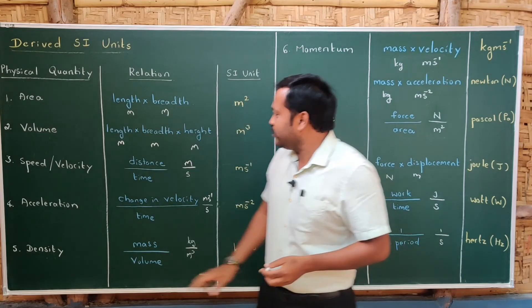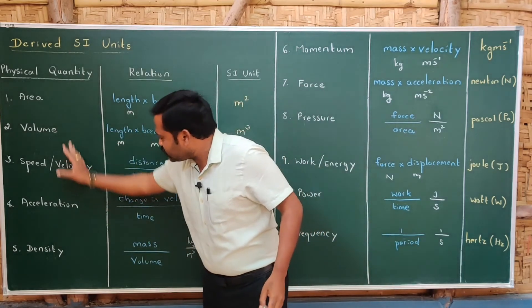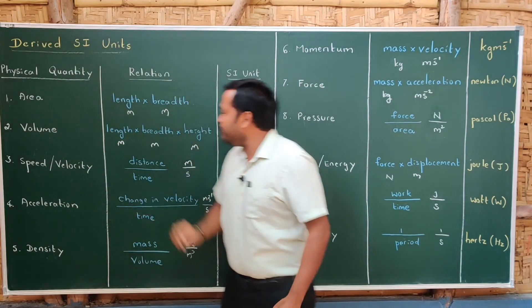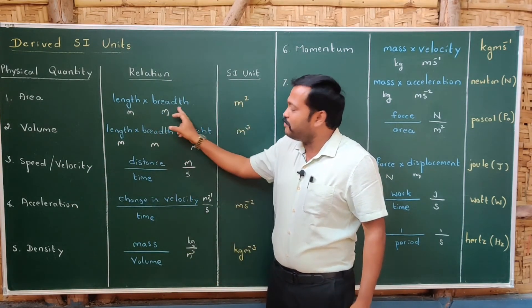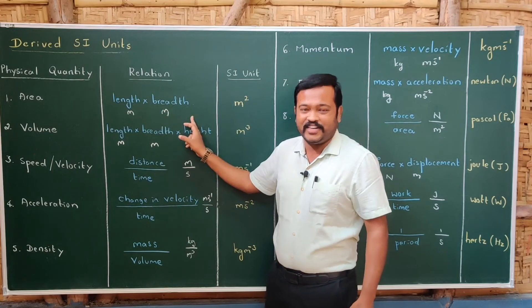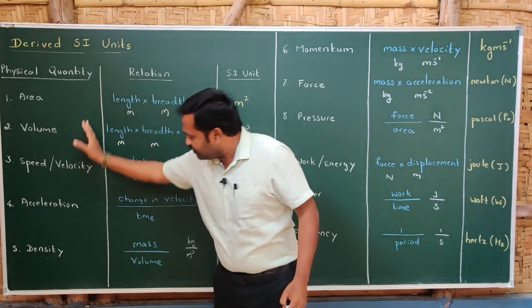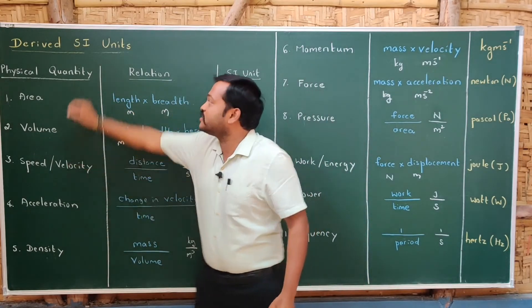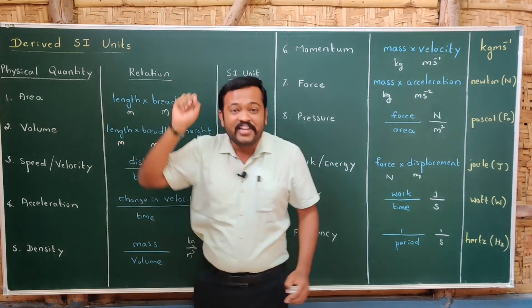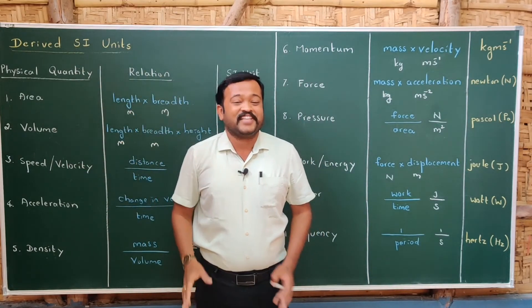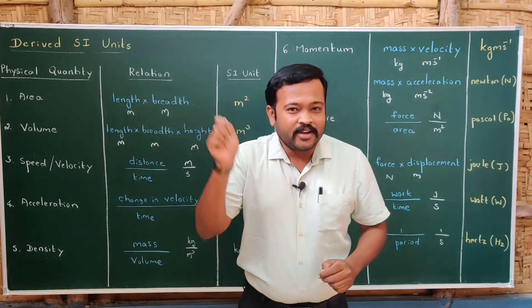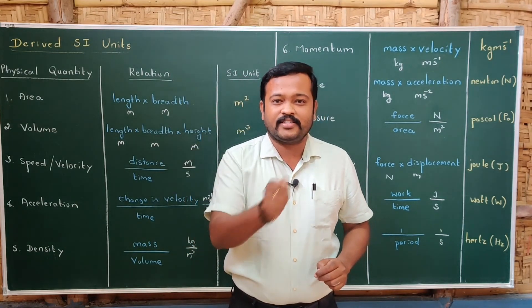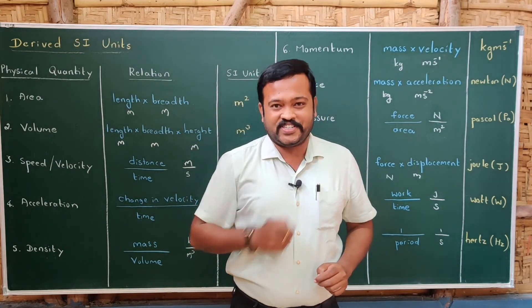One thing to observe is that all these physical quantities depend upon fundamental physical quantities — that is why they are called derived physical quantities and their SI units are called derived SI units.